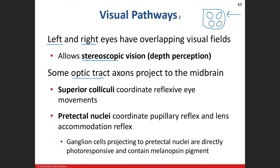Another nuclei area in our midbrain is the pre-tectal nuclei, which governs the pupillary light reflex. When a light is shone in your eye and your pupil constricts, that has to do with the pre-tectal nuclei. We also have the accommodation reflex — if you're looking at something far away and glance down at your phone, your lens accommodates: the ciliary muscles contract, the suspensory ligaments relax, and the lens forms a thicker shape.